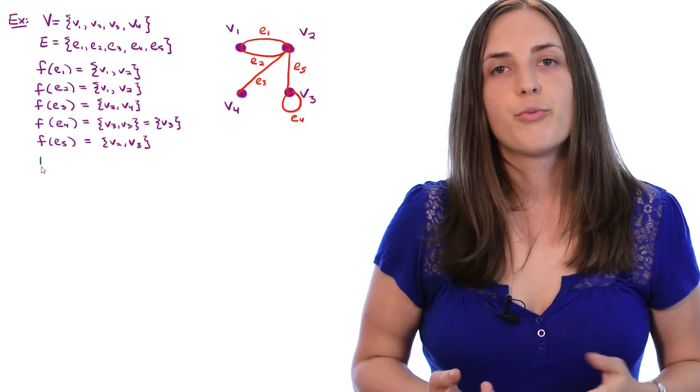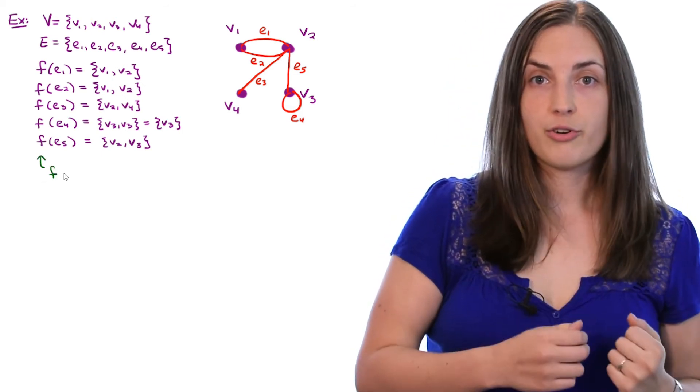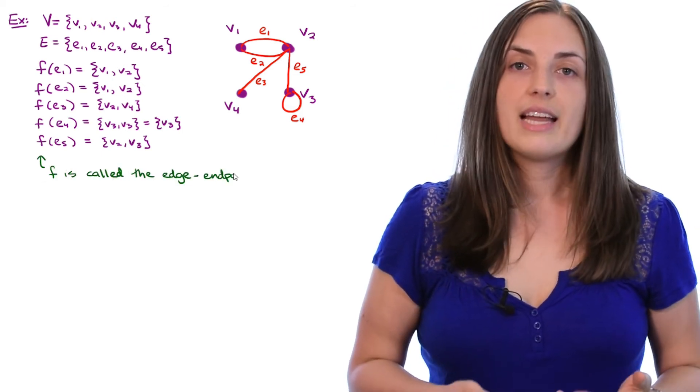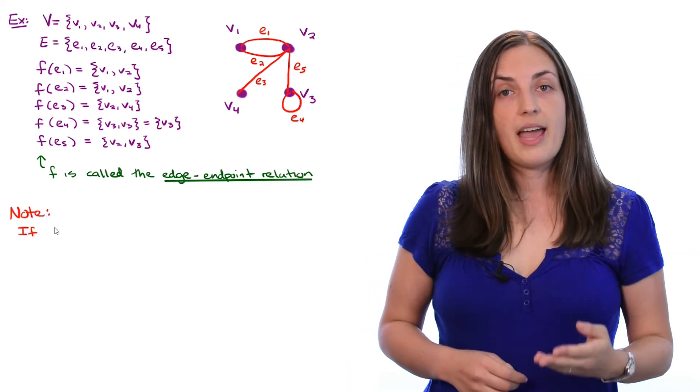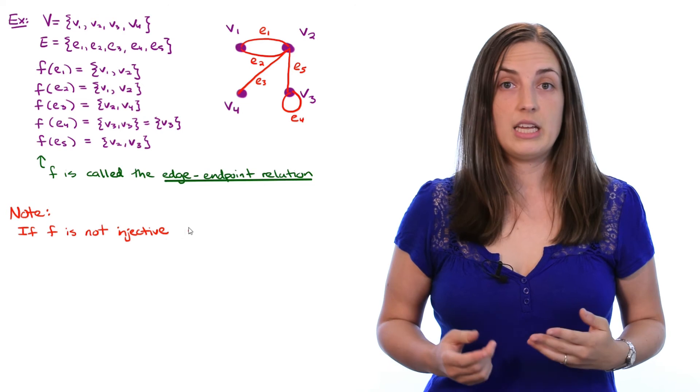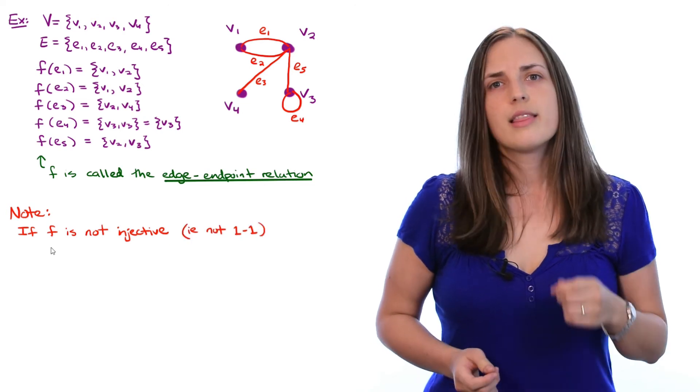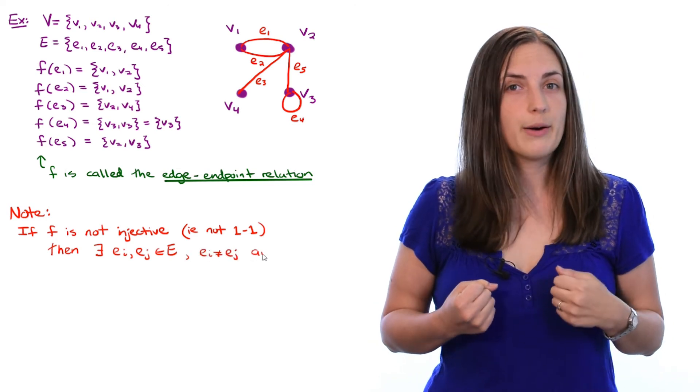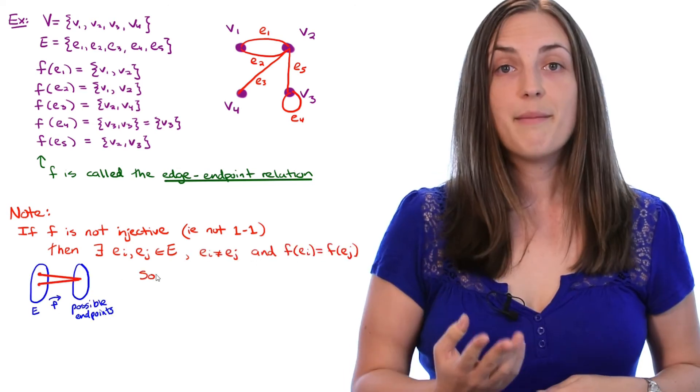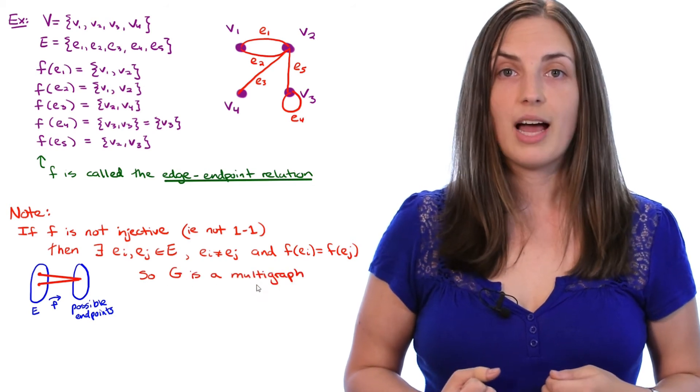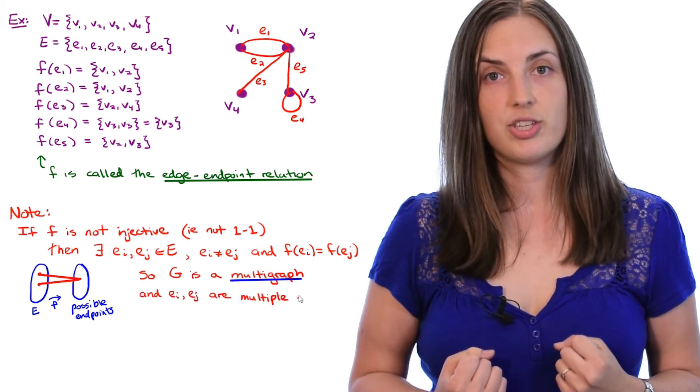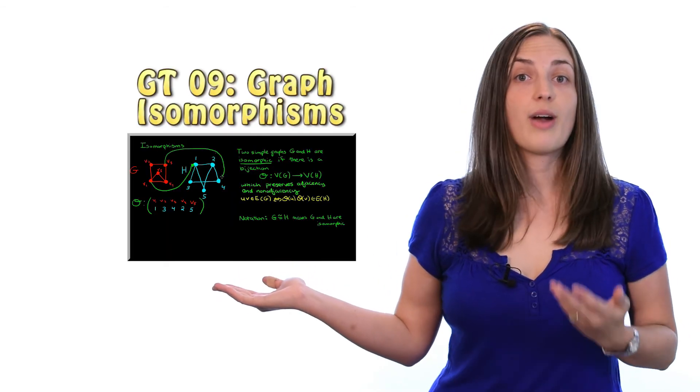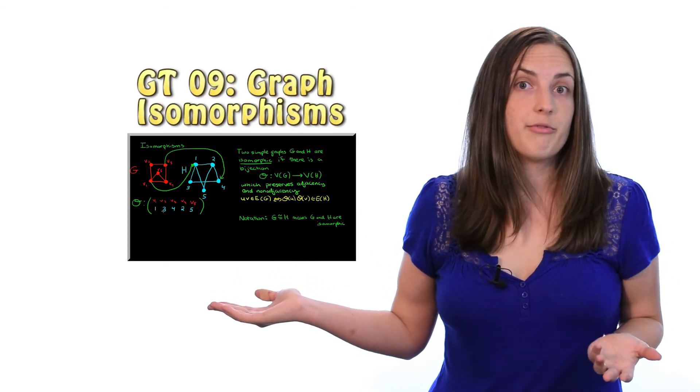The function F, which tells us how to map our edges to our vertices, is called the edge endpoint relation. Notice that if F is a mapping which is not injective, i.e. not one-to-one, then there exist two edges, EI, EJ, which are not equal, but which get mapped to the same endpoints. That means that G is a multigraph and EI, EJ are called multiple edges. If you'd like a further discussion about injective mappings, mappings that are one-to-one, then check out this video, which is all about graph isomorphisms, which are in fact injective mappings.